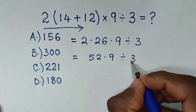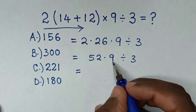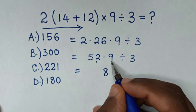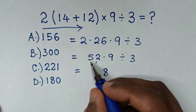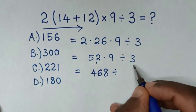Then it will be equal to 52 times 9. 9 times 2 is 18, carry 1. 9 times 5 is 45, plus 1 is 46. That gives us 468 divided by 3.